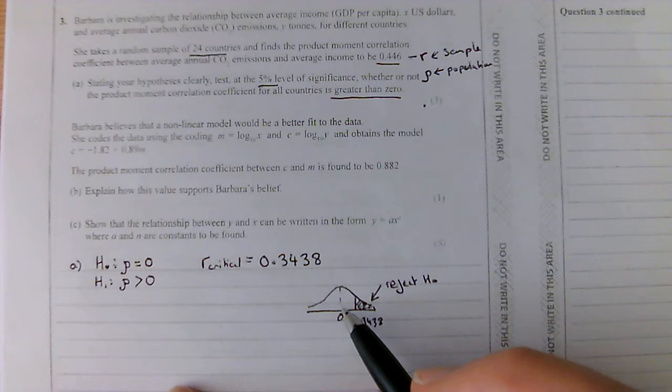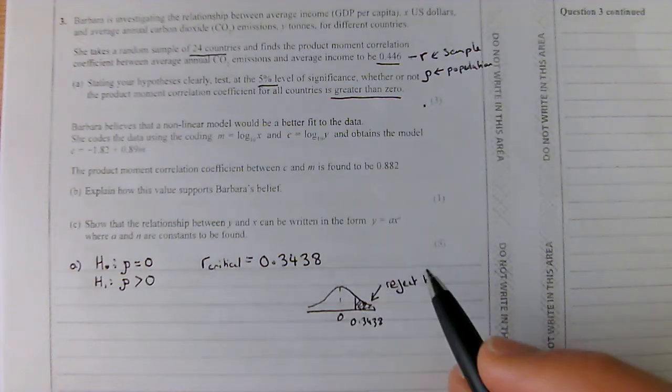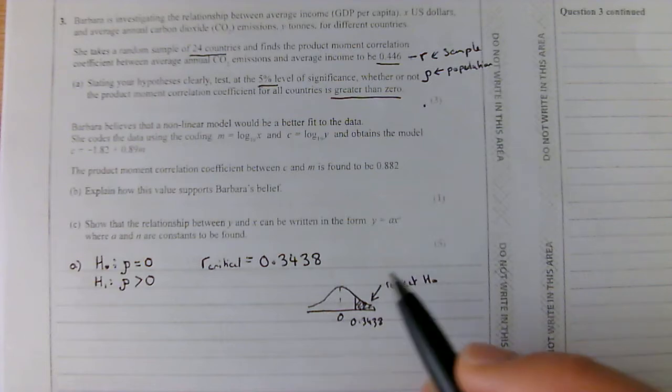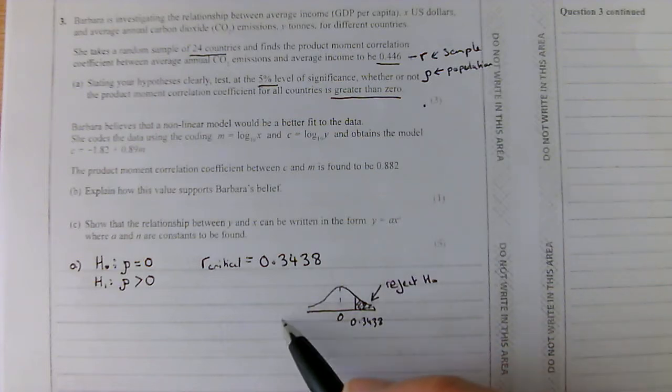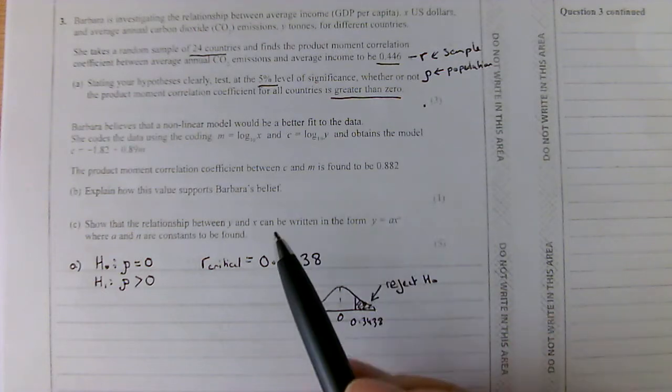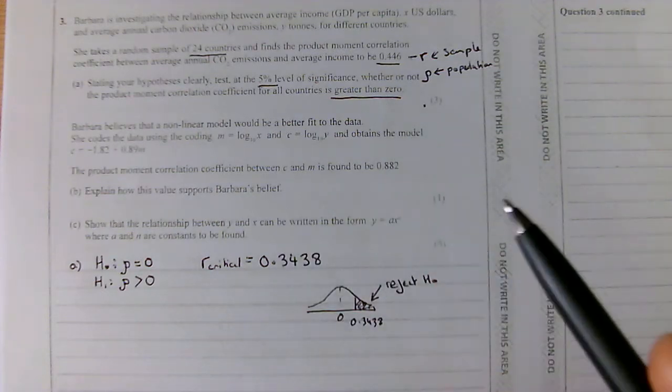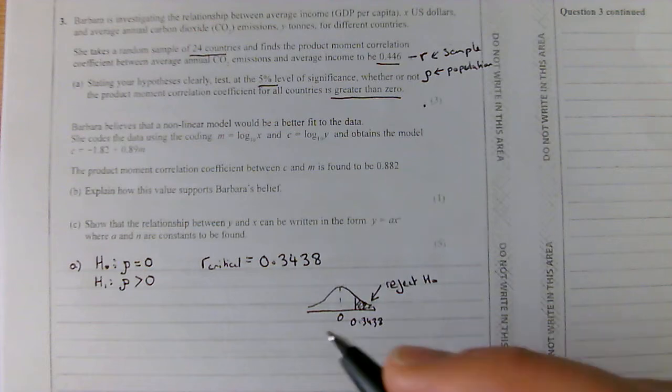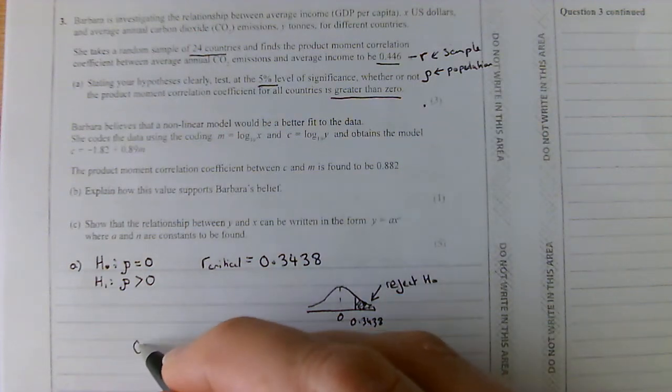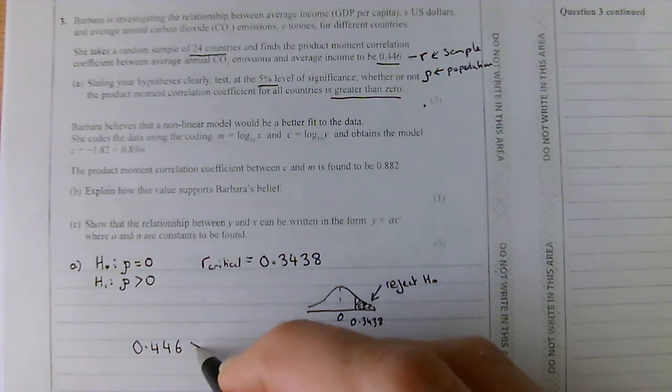If you're on the other side, if you were looking at your alternative hypothesis being that there was negative correlation, you would have minus 0.3438, and you'd be looking for anything smaller than minus 0.3438. So here, we know that the correlation coefficient is 0.446. So 0.446 is greater than 0.3438.